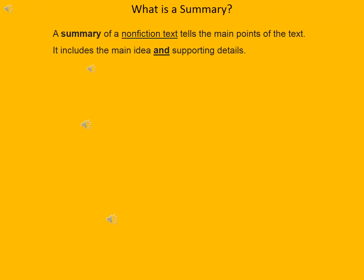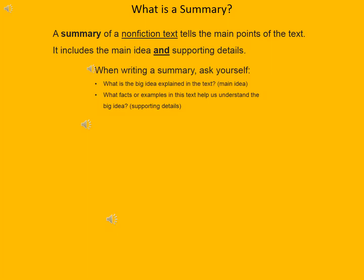Now that you've read through the article, we are going to be writing a summary. A summary of non-fiction text tells the main points of the text and includes the main idea and supporting details. When writing a summary, you must ask yourself: what is the big idea explained in the text? In other words, what is the main idea? You can find the main idea by asking yourself, who or what is the text about, and then what do you learn about it? Then ask yourself, what facts or examples in this text help me understand that big idea — what are the supporting details?